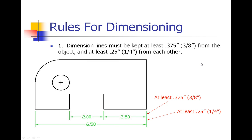We are going to go through a few of the rules for dimensioning the type of drawings that we are going to be doing throughout this course. First off, dimension lines must be kept at least three eighths of an inch from the object and at least a quarter inch from each other. And this is for aesthetics and readability.